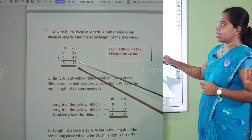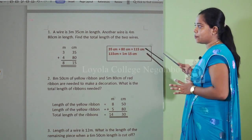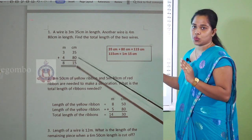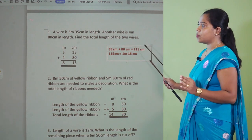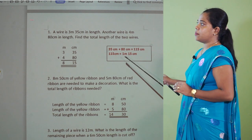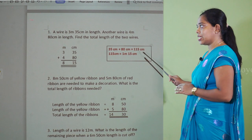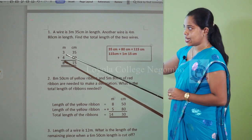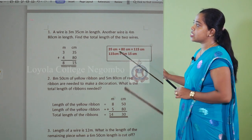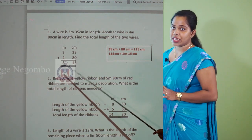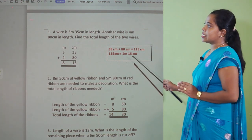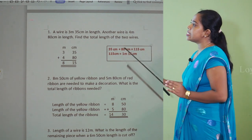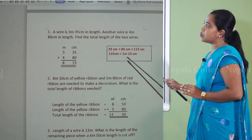When you add 35 and 80 you get 115 centimeters. But on the centimeter side, you can't have more than two digits. So 115 centimeters means 1 meter and 15 centimeters. You write 15 on the centimeter side and carry that 1 meter to the meter side. So 3 plus 4 is 7, and 7 plus 1 is 8. The answer is 8 meters and 15 centimeters.